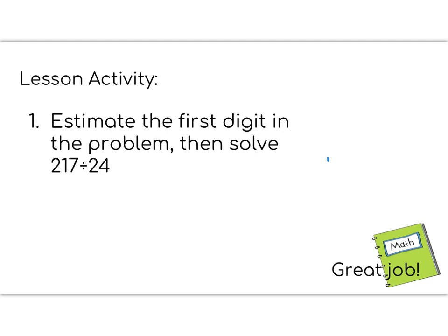Alright fifth graders, ready for our lesson activity. Today's lesson activity says estimate the first digit in the problem and then solve. So we're going to need to divide 217 by 24. So we know 24 doesn't go into 2, 24 doesn't go into 21, so it's going to have to go into 217. So our digit is going to be in the 1s place.